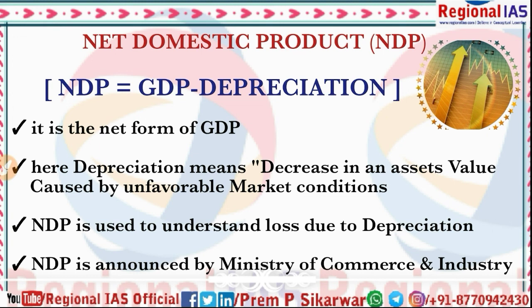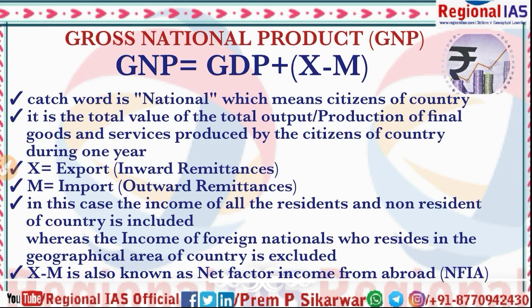The word 'national' means citizens of a country. GNP is the total value of total output — the production of final goods and services produced by the citizens of a country during one year.